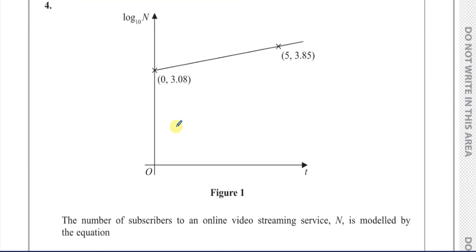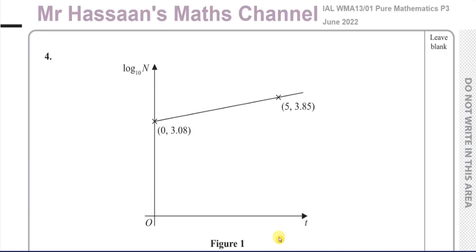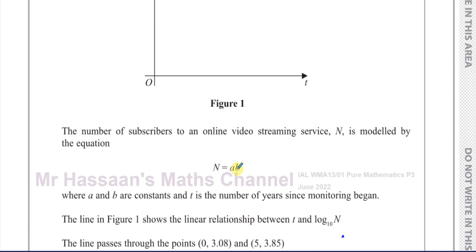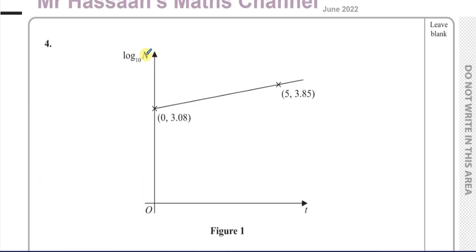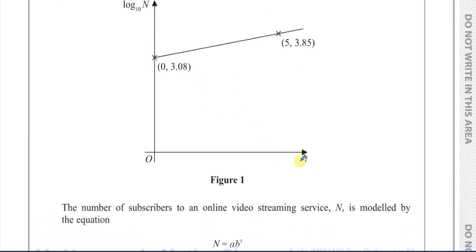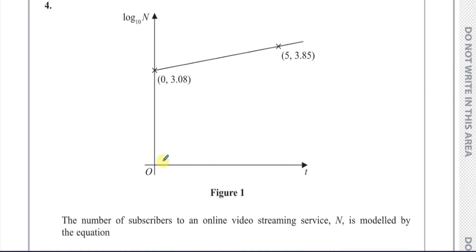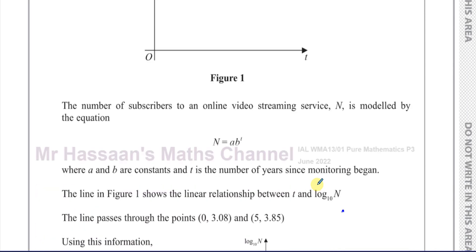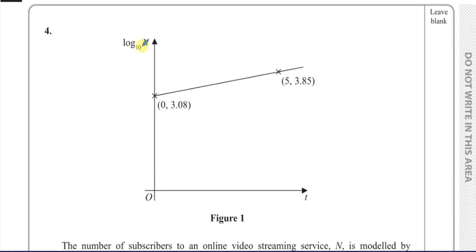The question says the number of subscribers to an online video streaming service N is modelled by the equation N equals A times B to the power of T, where A and B are constants and T is the number of years since monitoring began. The line in figure one shows a linear relationship between T and log to the base 10 of N.